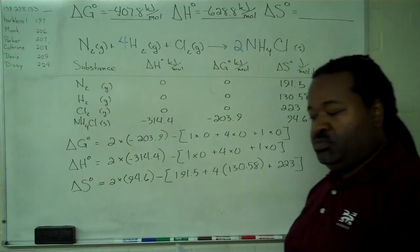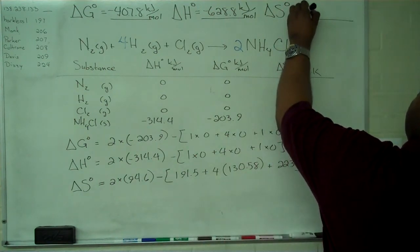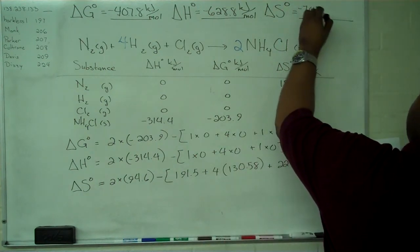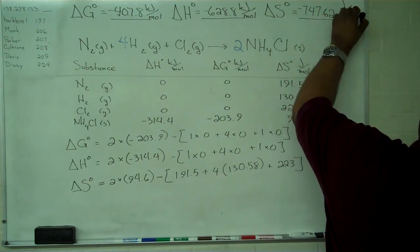When we simplify through, in this case, we get a value of negative 747.62 joules per mole Kelvin.